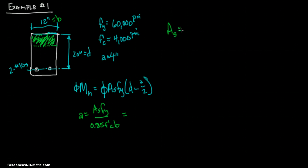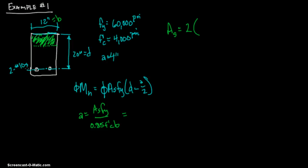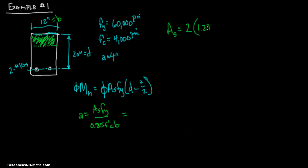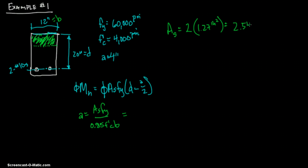So area of steel equals what? Well, it's two times the area of one number 10 bar. So we have two. And if you go on page 87, it has the ASTM standard reinforcing bars. Go down to number 10. Go over to nominal area square inches. And it's 1.27 square inches. So you do this, 1.27 inches squared. And that's going to equal what? 2.54 inches squared.